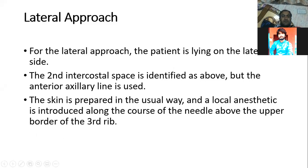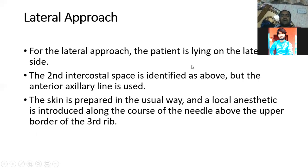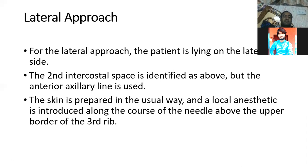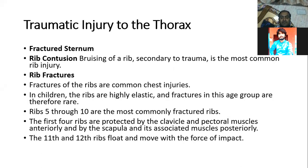For the lateral approach, the patient is lying on their lateral side. The second intercostal space is identified by the anterior axillary line. The skin is prepared in the usual way and local anesthesia is introduced. The needle is inserted above the upper border of the 3rd rib. The plunger is pushed in to release air, and the patient may feel a strong sensation in the throat. This is the treatment for tension pneumothorax.